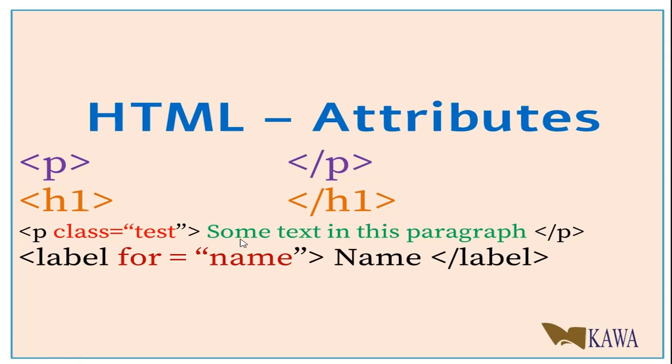Something we need to know about attributes is that attributes should always be in the opening tag. This is a paragraph opening tag, and this is where our attribute goes. It should not be in the closing tag. If you look at that, you realize that attributes always come in an opening tag and should never be in the closing tag.